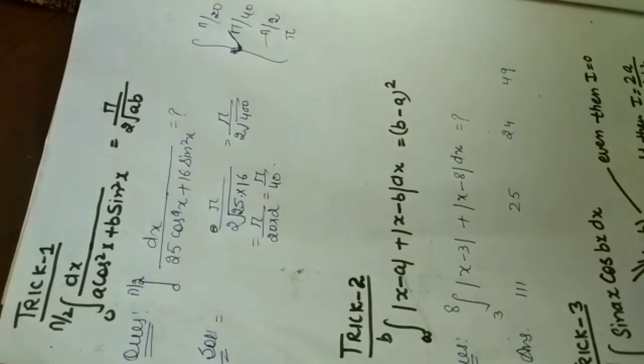So we are going to discuss integration tricks. Our first trick is integration of 1 over a cos square x plus b sin square x. Limit is from 0 to pi by 2. Its answer will be pi over 2 root ab.